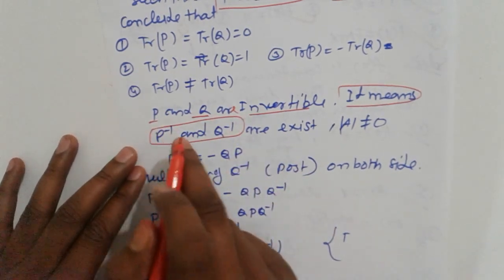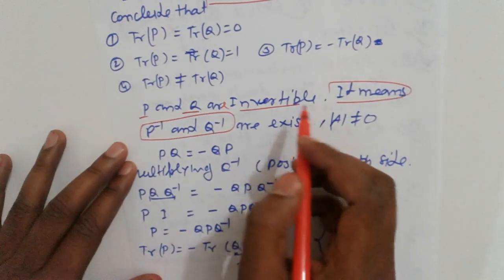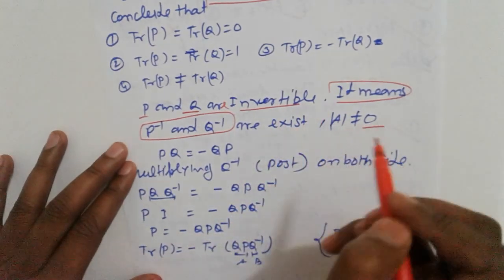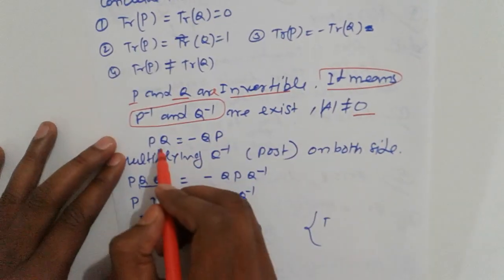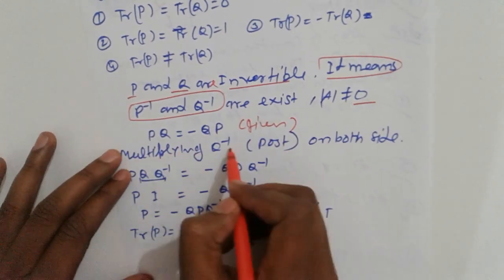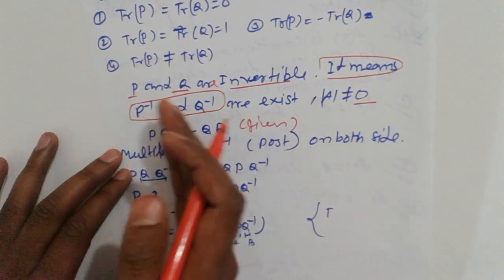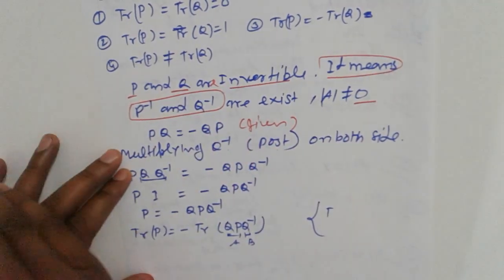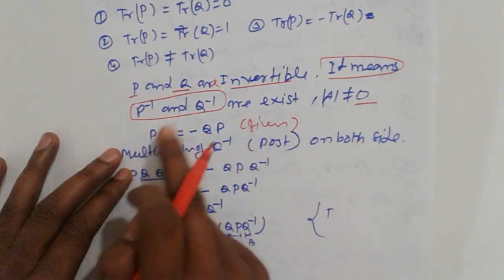P inverse and Q inverse exist, which means the determinant is not equal to zero. PQ is given, so multiply by Q inverse post and apply P inverse here, post on both sides.